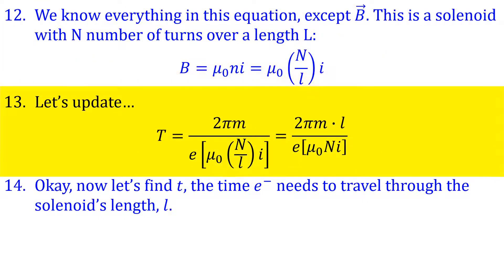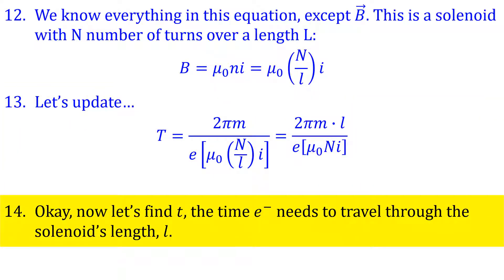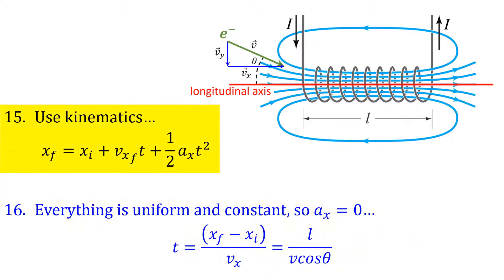Here's our updated expression for the electron's period of circular motion. Now let's move on to find out how much time it takes the electron to go from one end of the solenoid to the other end. This is a job for kinematics. The magnetic field is uniform everywhere within the solenoid.